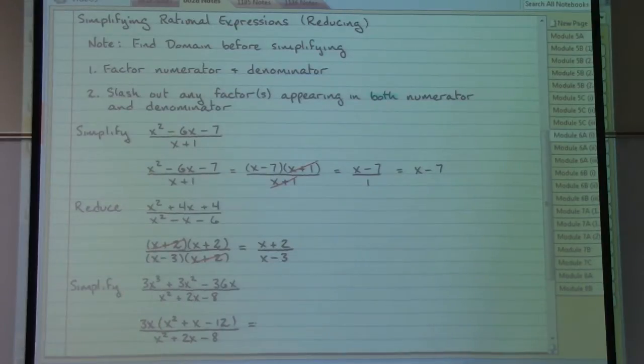And going back to the numerator and the expression inside the parentheses here, there are three terms. So once again, we must use our AC method. And we would have, in addition to the 3x out in front already, x minus 4 times an x plus 3.